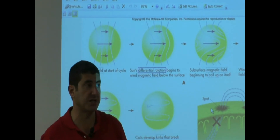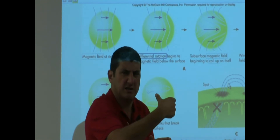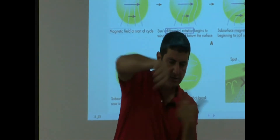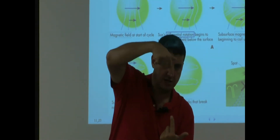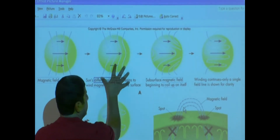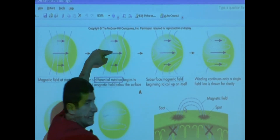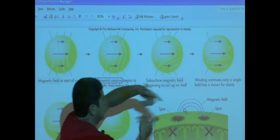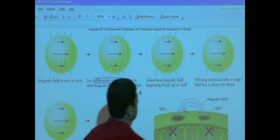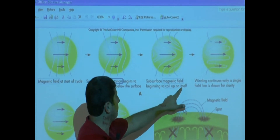Remember, one of the things we noticed is that the middle of the sun rotates quicker than the ends. It's weird — the sun can do that because it's a gaseous object. So the middle winds faster and the ends rotate slower. Imagine you take a bunch of yarn and start twisting the middle faster than the ends — that yarn is going to start wrapping itself up and up and up in a weird fashion, and you're going to have the subsurface magnetic field beginning to coil up on itself.